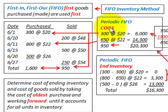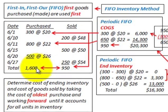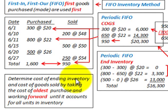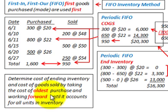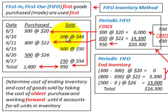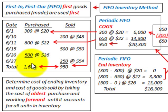We're starting with the periodic FIFO method, then comparing it to the perpetual FIFO method. With periodic FIFO, you determine the cost of ending inventory and cost of goods sold by taking the cost of the oldest purchase and working forward. When using the periodic method, we're not concerned with quantities sold at specific dates, but the total quantity sold for the period — which is 950 units sold out of 1,600 units purchased.